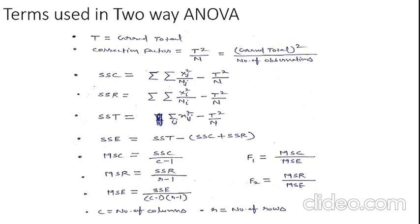The value of MSC will be equal to SSC upon C minus one. The value of MSR will be equal to SSR upon R minus one. The value of MSE will be equal to SSE upon C minus one R minus one. C is the number of columns and R is the number of rows.